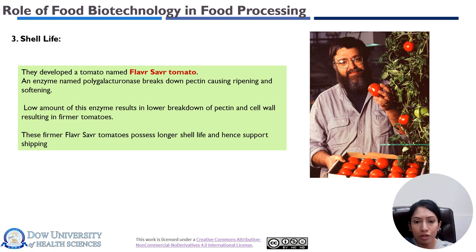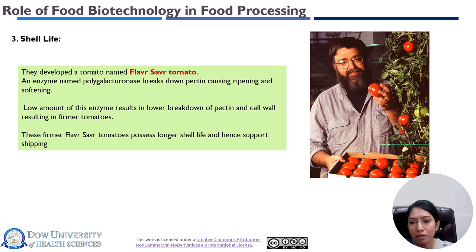The Flavr Savr tomato was the first genetically engineered food product granted a license for human consumption. It was developed by the California company Calgene in the 1980s. The tomato has an improved shelf life with increased fungal resistance and a slightly increased viscosity compared to the non-modified counterpart. It was meant to be harvested ripe for increased flavor and long-distance shipping. The Flavr Savr contains two genes: the first is the reversed antisense polygalacturonase gene which inhibits the production of the rotting enzyme, and a gene responsible for resistance to aminoglycoside antibiotics.